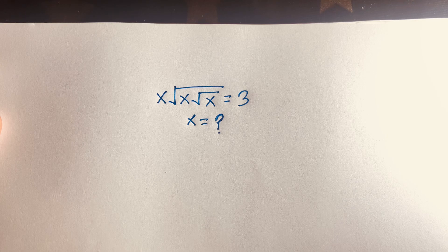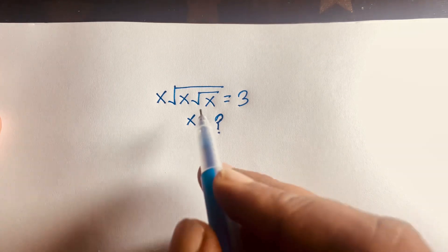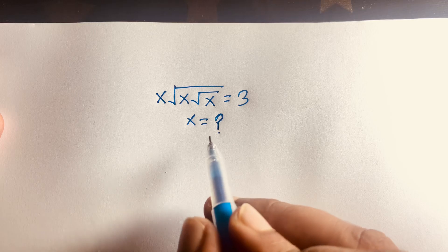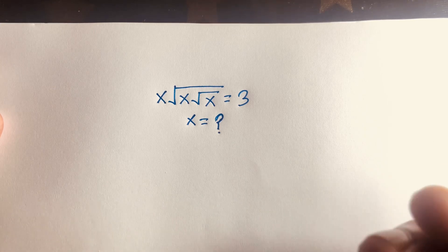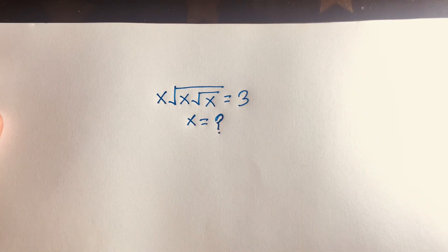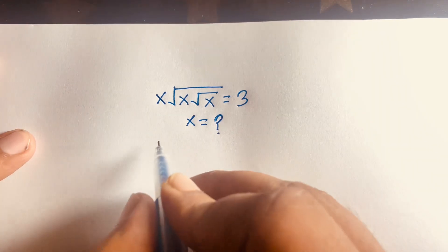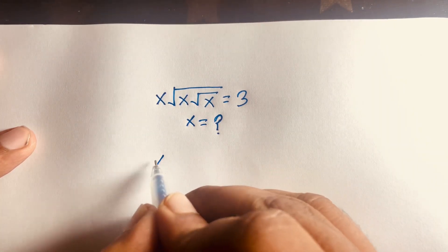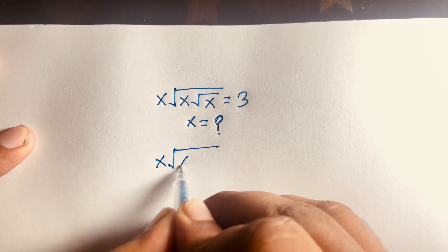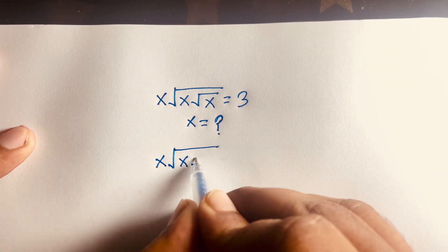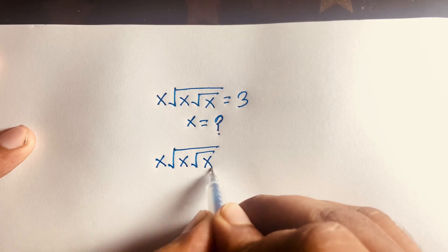In this video we solve this math olympiad question: x times the square root of x, all raised to the square root of x, is equal to 3. We need to find the value of x.